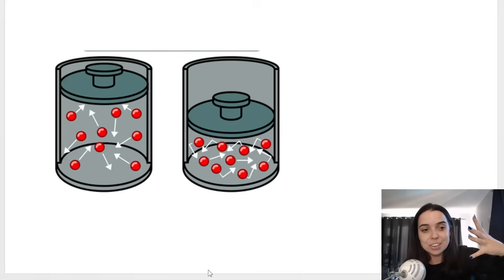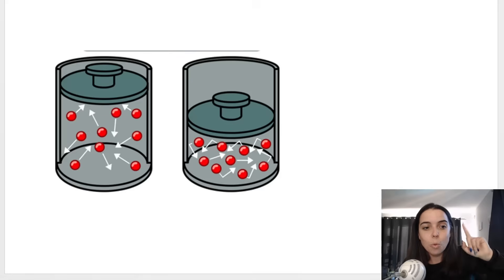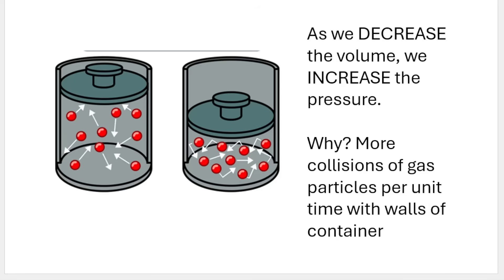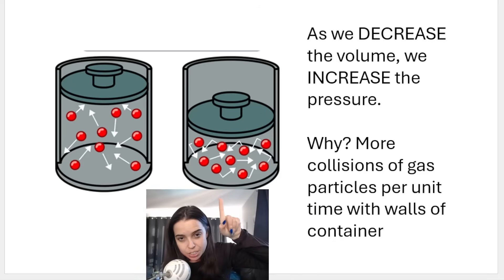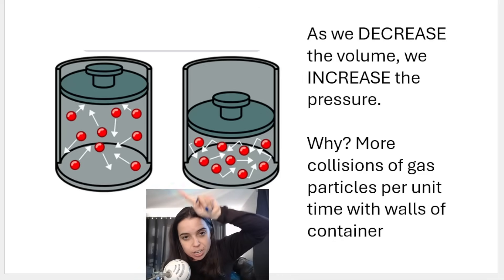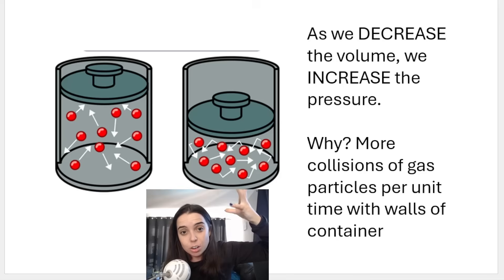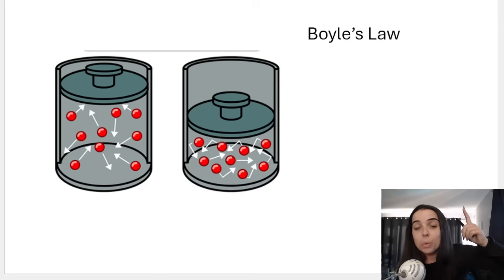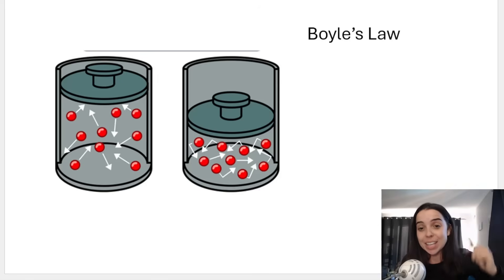As we decrease the volume of the container and make it smaller, the pressure increases. This is because there will be more collisions of gas particles with the walls of the container — more collisions per square meter on the container walls. This relationship is what we refer to as Boyle's law, which we cover in other videos in this playlist.